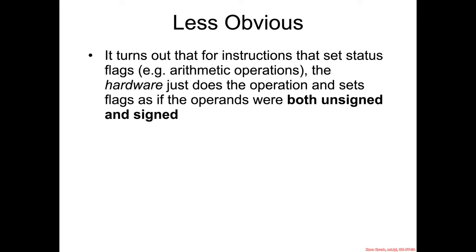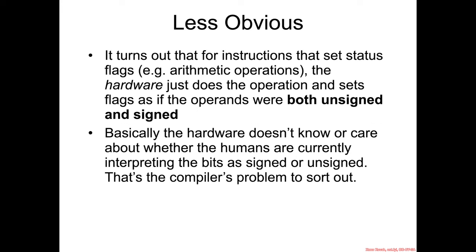What's less obvious — because I sort of skipped over it when talking about things like add and subtract — is that instructions which set status flags, such as arithmetic operations like add and subtract, have the hardware doing the operation as if the operands were both unsigned and signed. The hardware doesn't care about whether humans will later interpret the bits as signed or unsigned. It just does operations like subtract and sets all status flags — not just zero and sign, but the overflow flag, the parity flag, and so forth — as if the operands were both signed and unsigned.